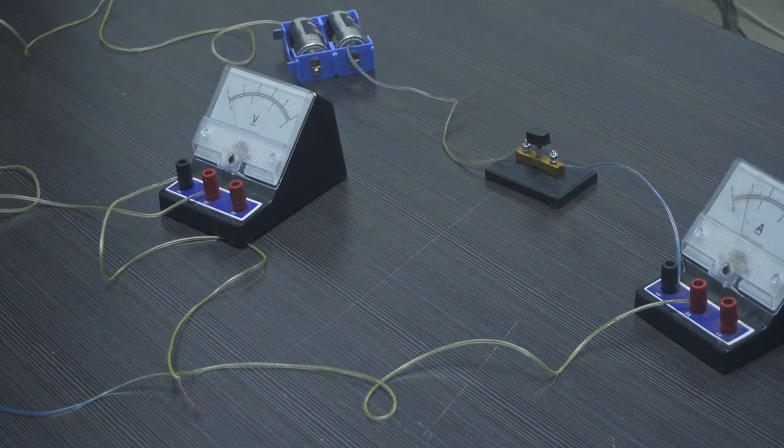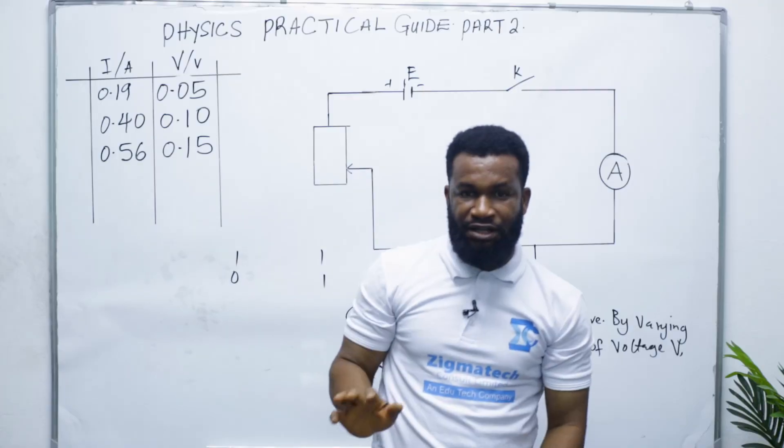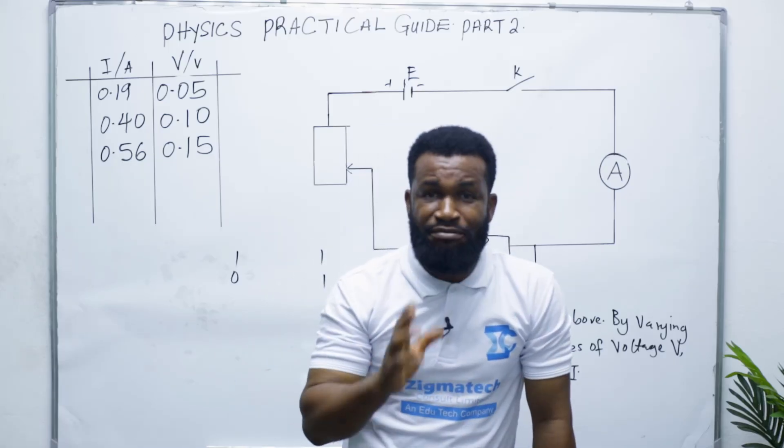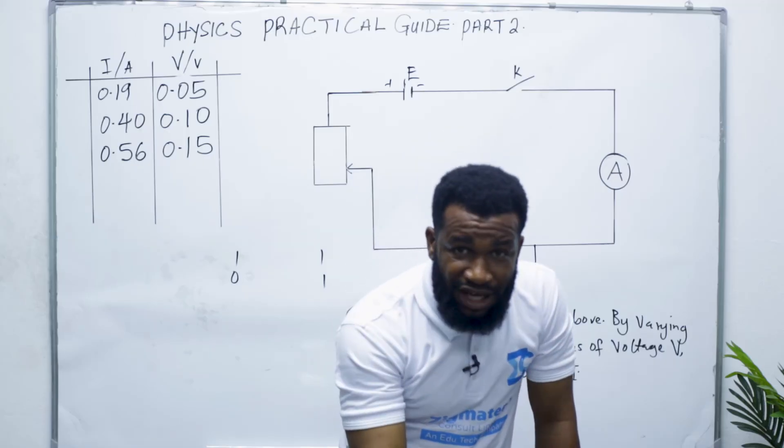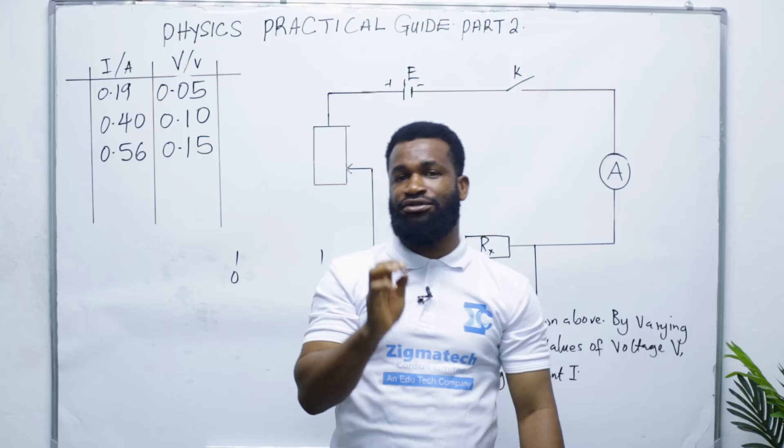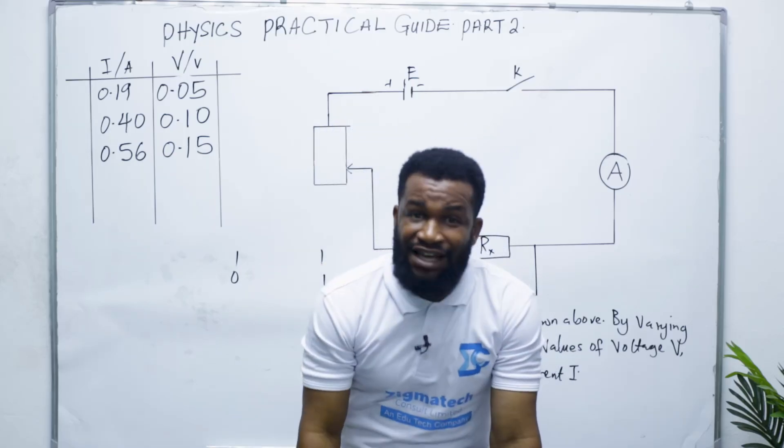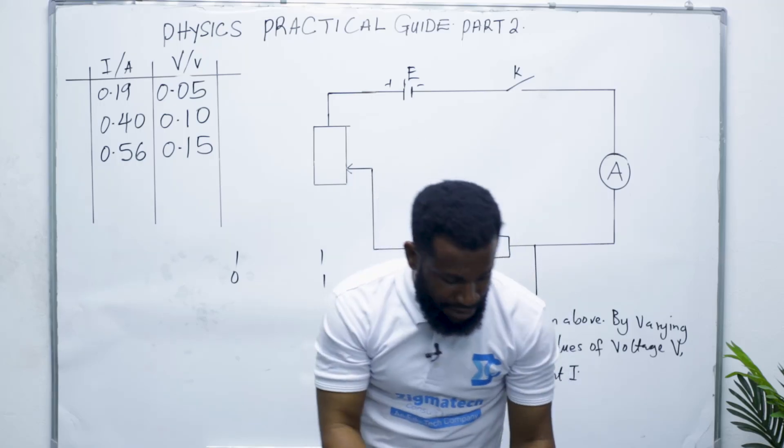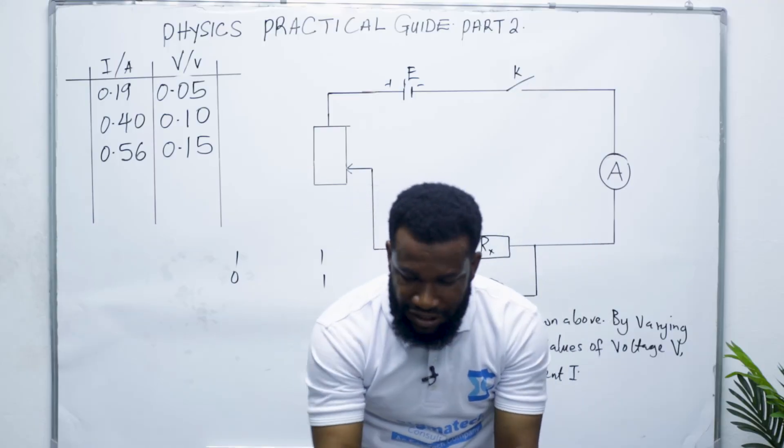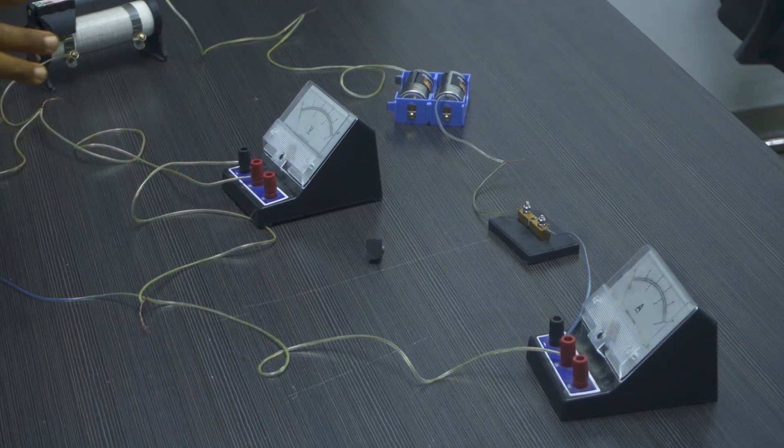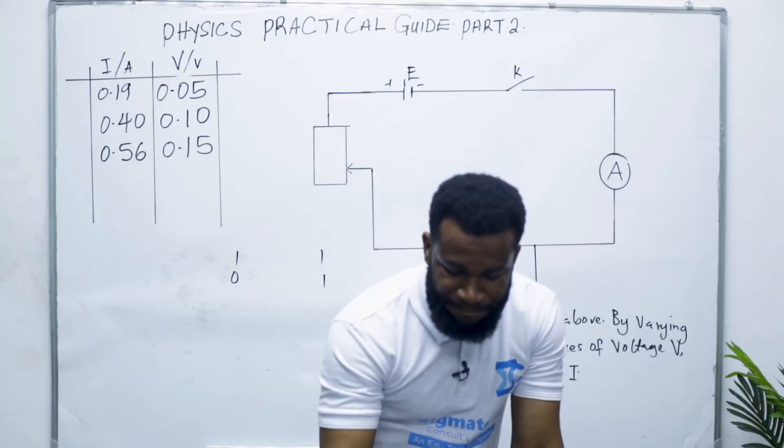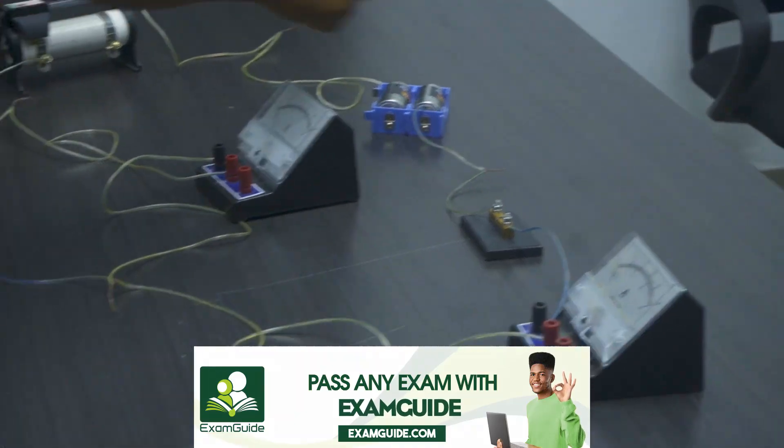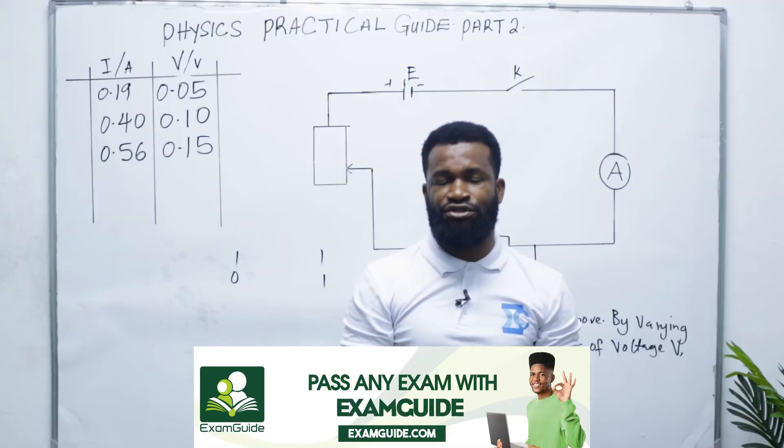All right, so this is how it works. Let me open the battery. Remember the precautions. Number one, I avoided error due to parallax while reading the voltmeter and the ammeter. Number two, you can say I ensured tight connection to avoid fluctuation of current. That means tight connections. If they are not well tightened, the voltmeter and the ammeter will be fluctuating. Number three, you can also say that I ensured I opened the key when not taking the reading to avoid loss of energy of the cell.